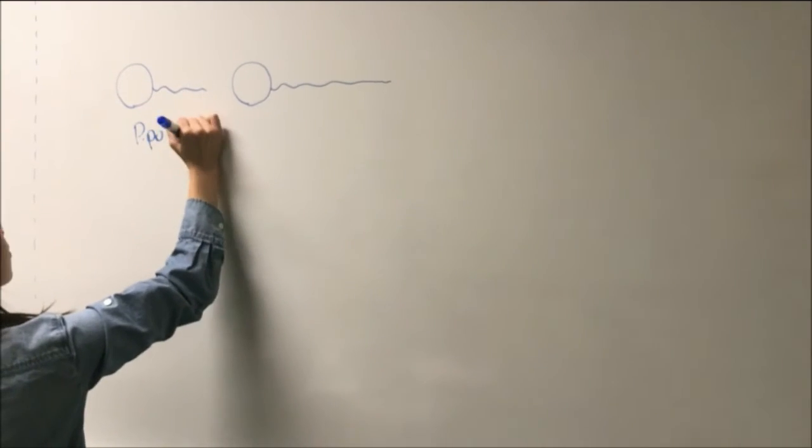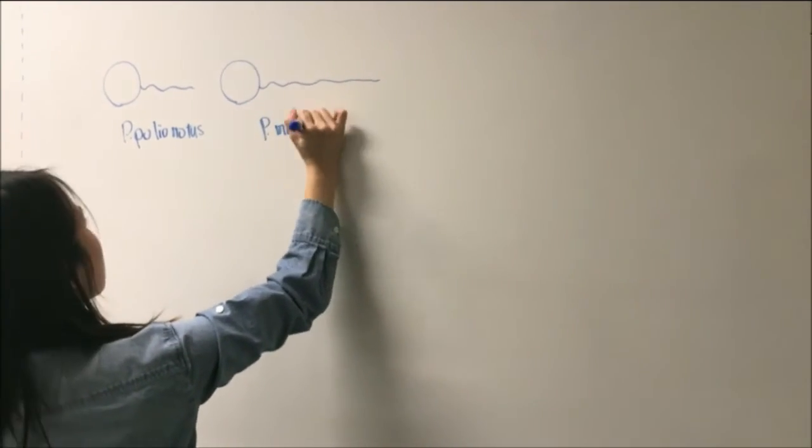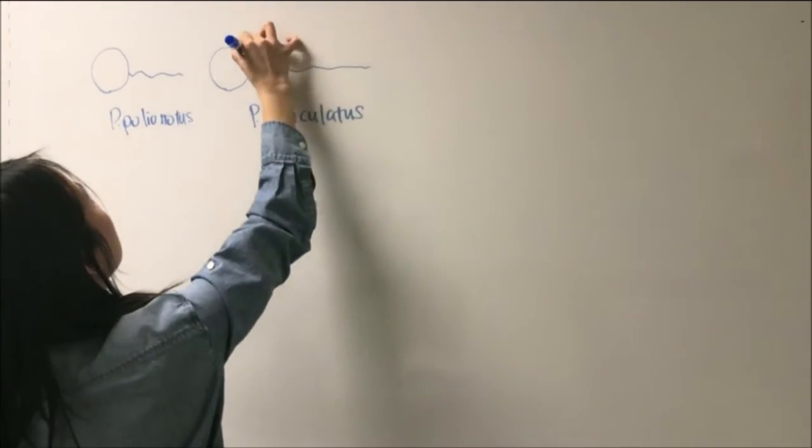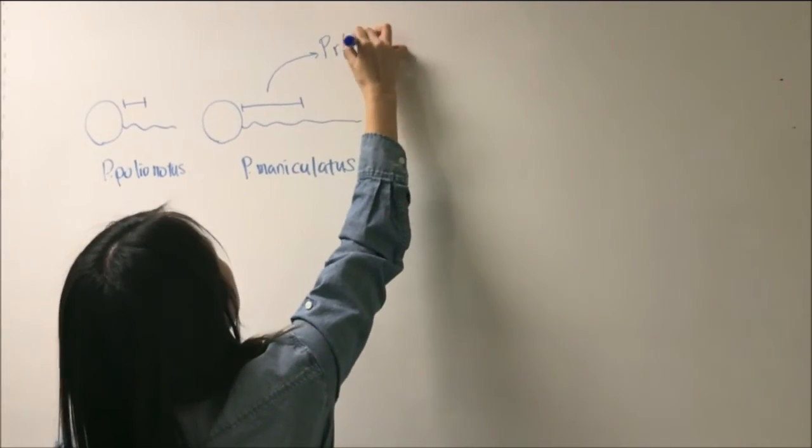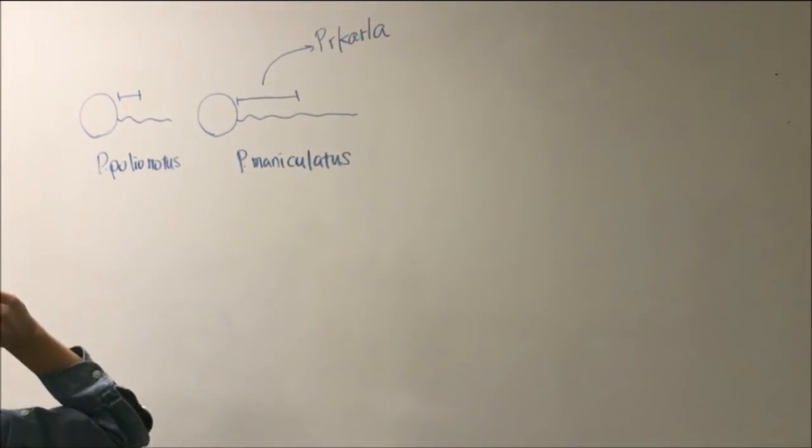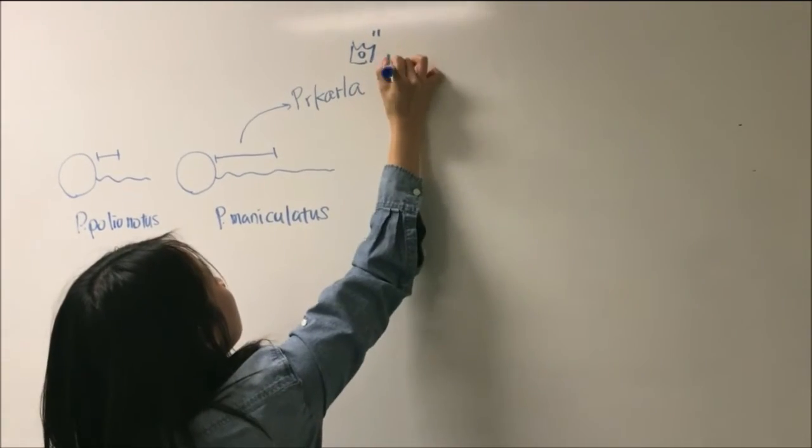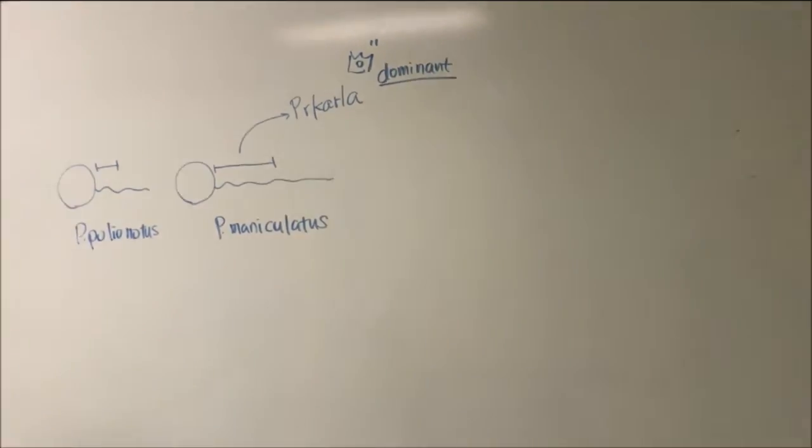Research has found that P. maniculatus has a longer midpiece than P. polionotus. The gene that is responsible for influencing midpiece length is the PRKR1A gene. It is responsible for 33% of the variation in midpiece length.